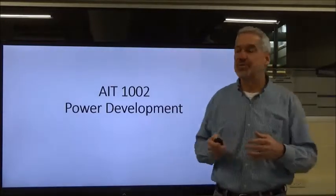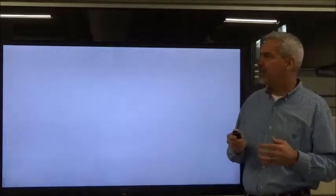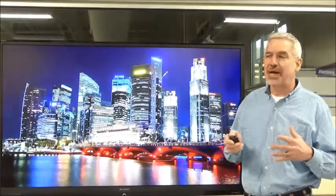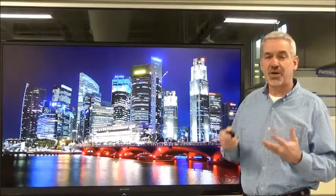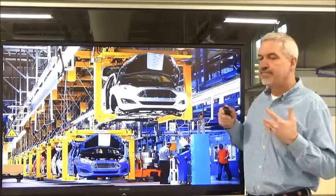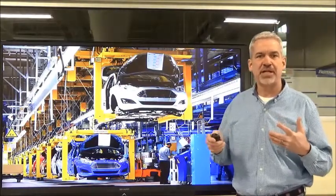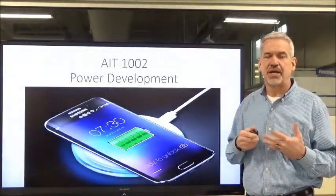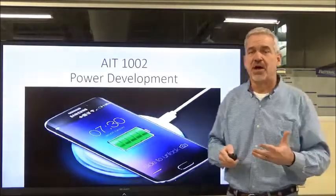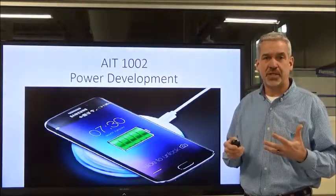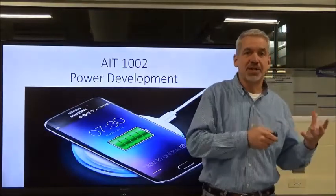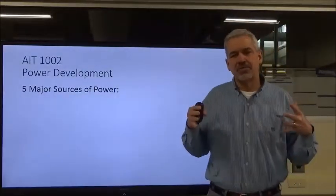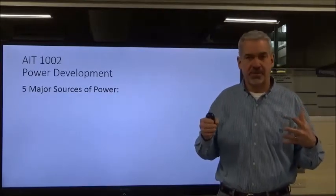Let's go ahead and get started with power development. We use electricity all over the United States — it powers our cities, lights, infrastructure, transit systems, factories, and simple things like charging our cell phones, iPads, tablets, and PCs. All of this uses electricity, and it all comes basically from our power grid. Right now we're going to take an overview of the sources of electricity.